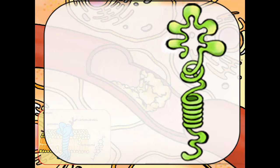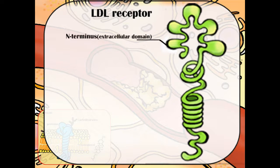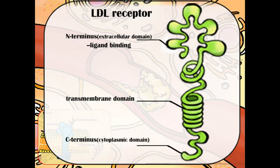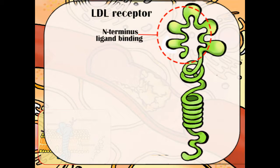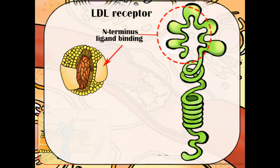LDL-R is a transmembrane glycoprotein divided into several domains, majorly including the ligand-binding domain, the transmembrane domain, and the cytoplasmic domain. The ligand-binding domain contains a seven-time disulfide-bonded cysteine-rich repeat, which is a cluster of negatively charged amino acids binding its ligand, ApoE, by attaching to its positively charged alpha helix.